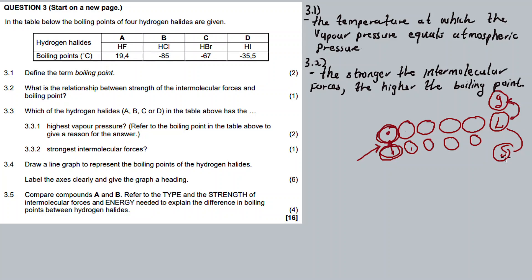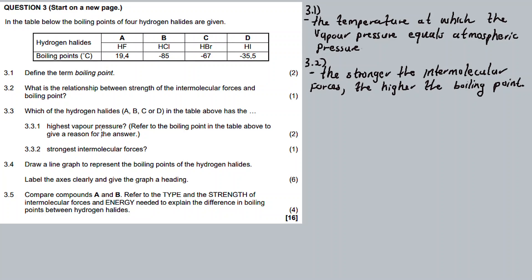So if the bonds are much stronger, it means we need a lot of energy to break them as we change from liquid to gas — and that's what determines the boiling point. Now 3.3: which of the hydrogen halides A, B, C, or D in the above table has the highest vapor pressure? Refer to 3.1 and the boiling point in the table to give a reason for the answer.